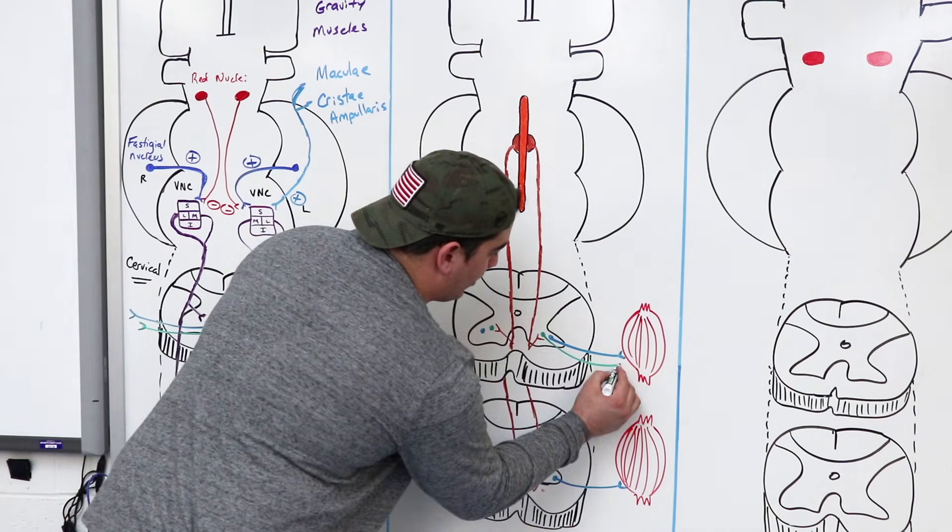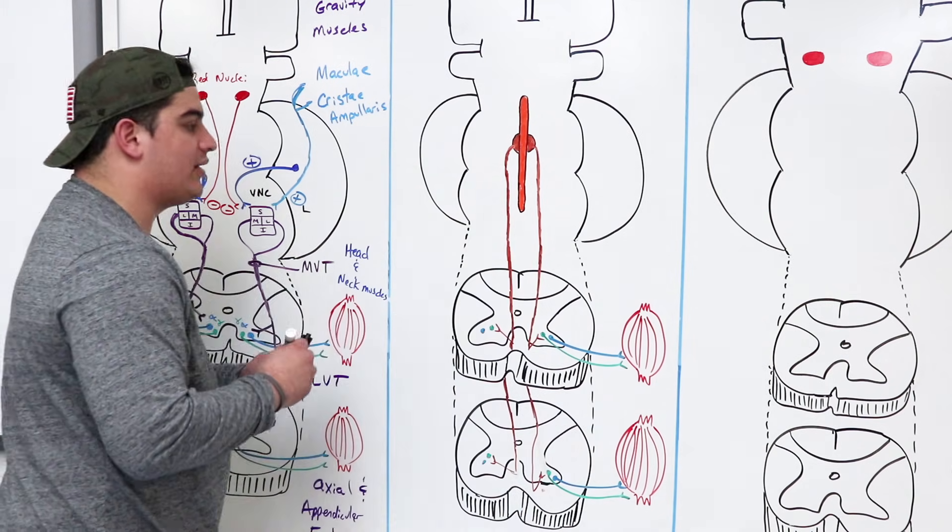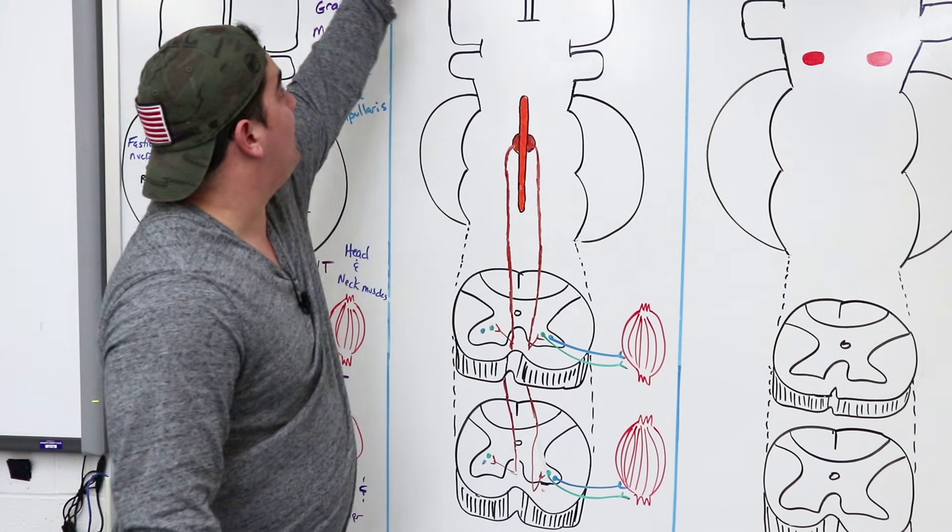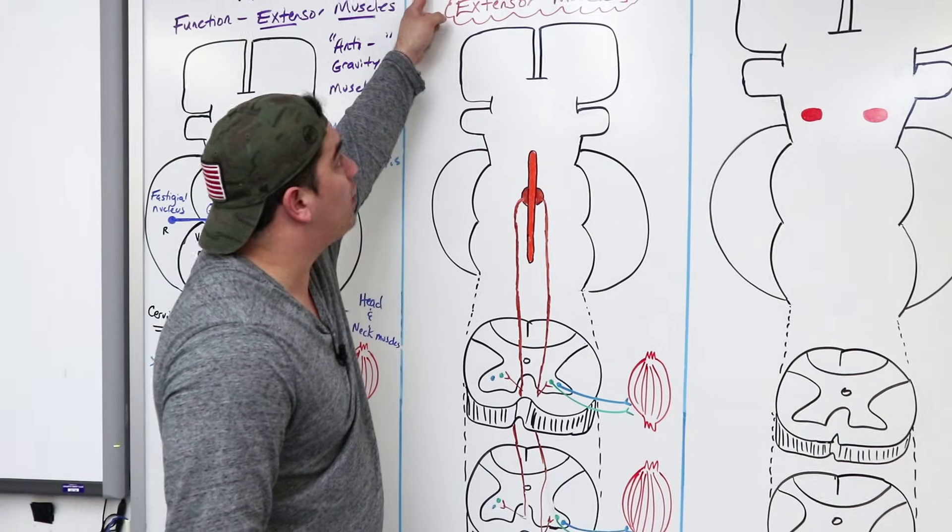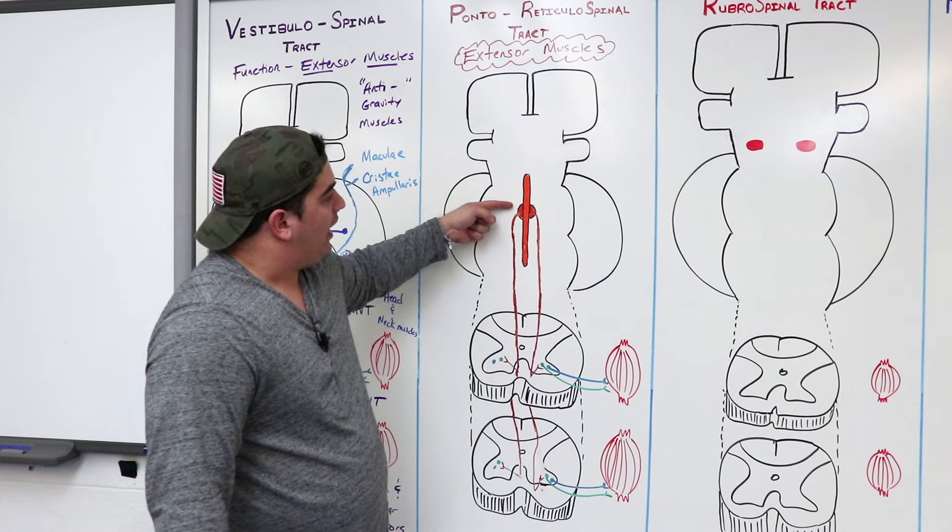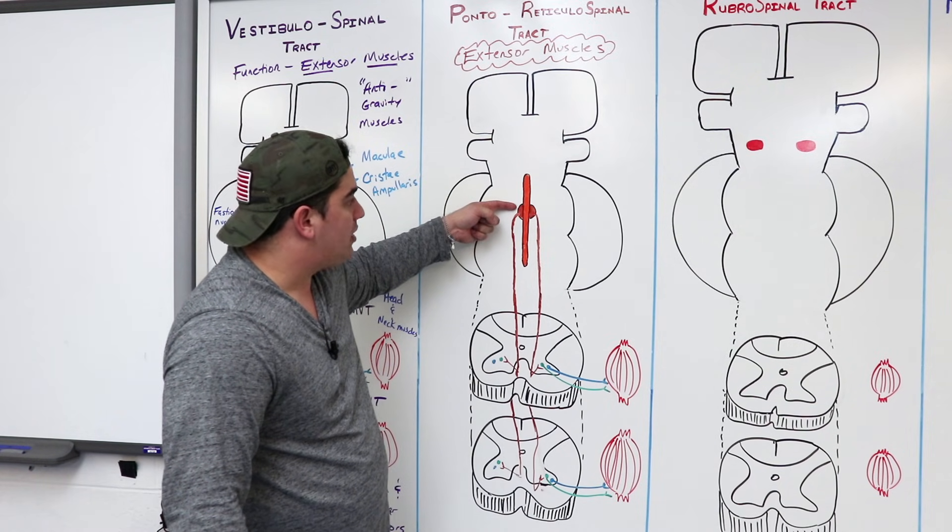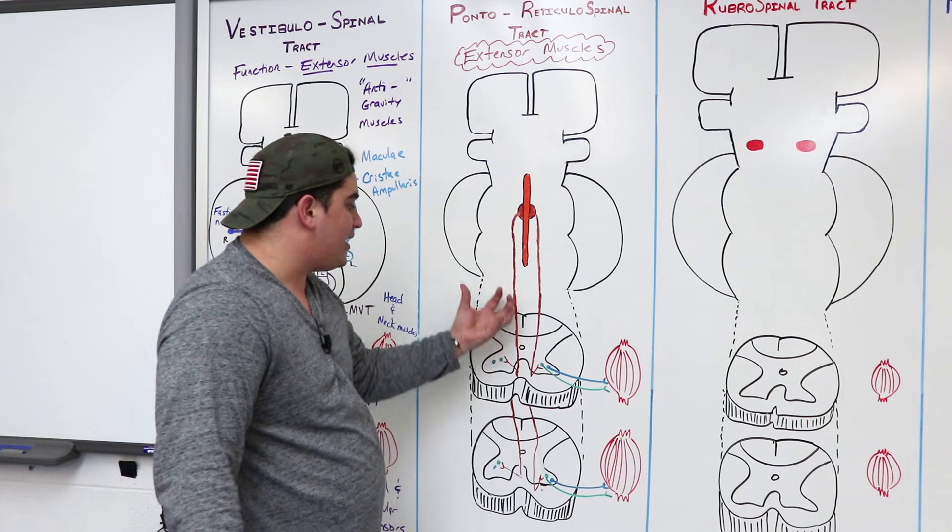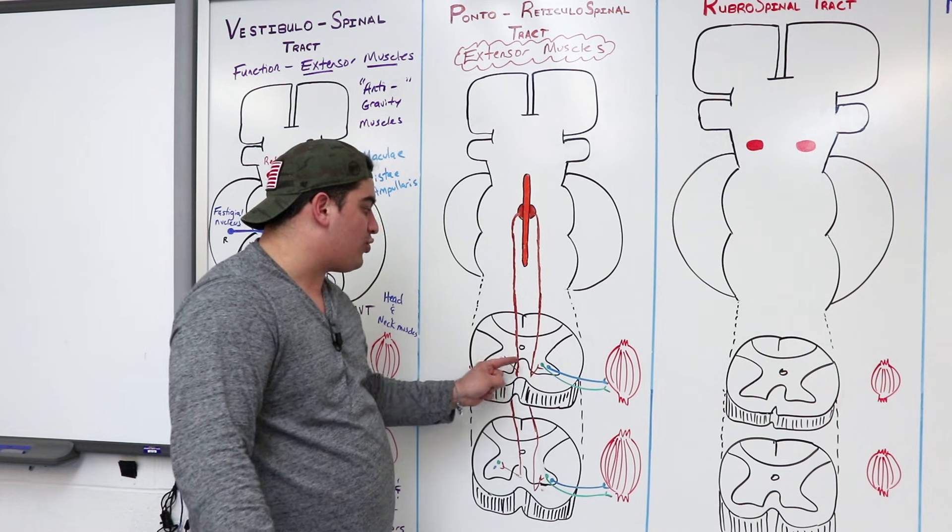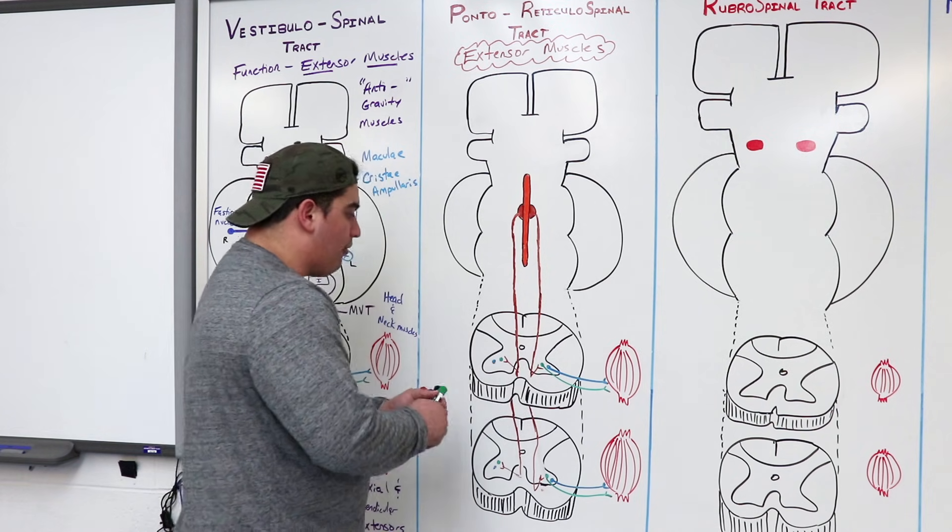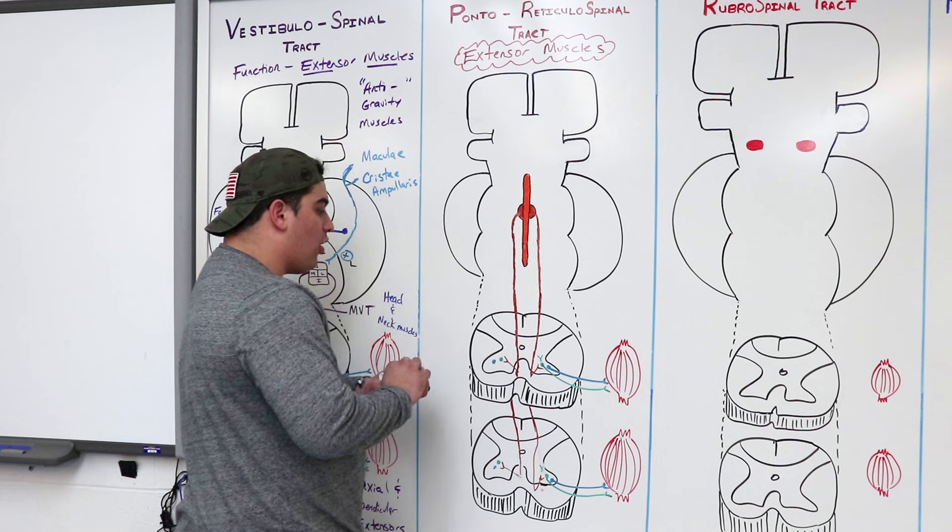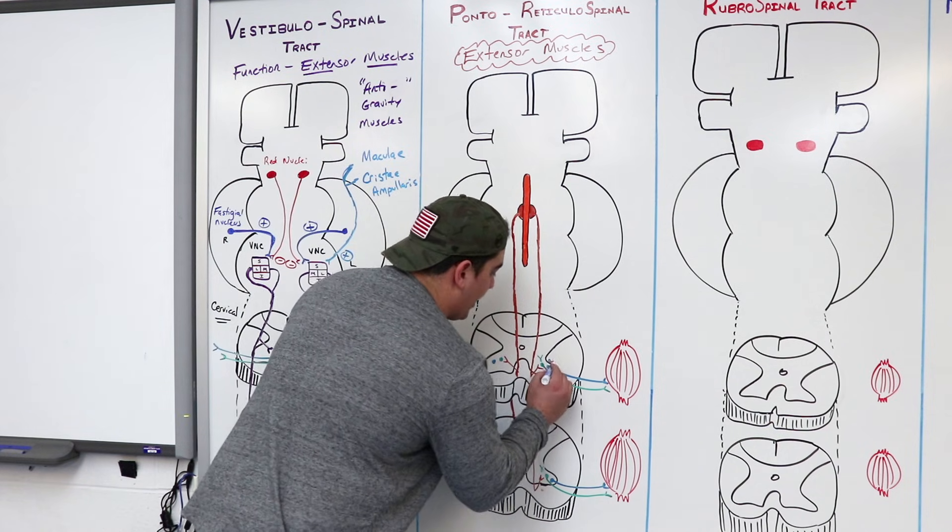So this is why this is important to remember this stuff. Basically the important thing is to remember, what is its overall function? So if you combine these two together, the vestibulospinal tract and the pontoreticulospinal tract, remember that they both are supplying extensor muscles. The actual nucleus for this originates within the pons, part of the reticular formation, descends down through the anterior or ventral white column, and then synapses on the cell bodies of the anterior or ventral gray horn via the alpha motor neurons and the gamma motor neurons.